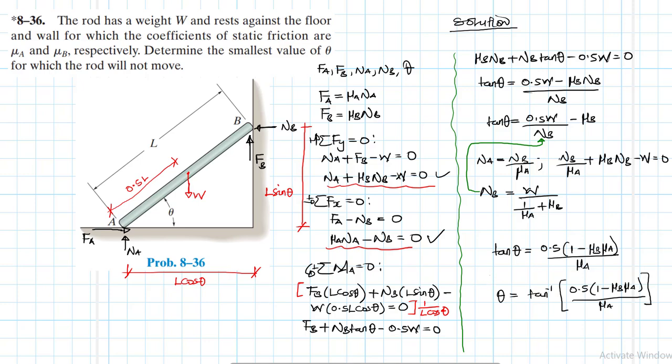I guess we are done with our problem. So this is the smallest value of θ for which the rod will not move.